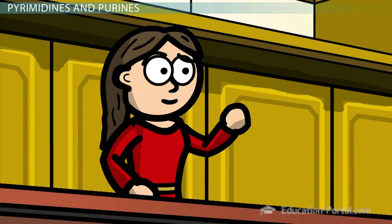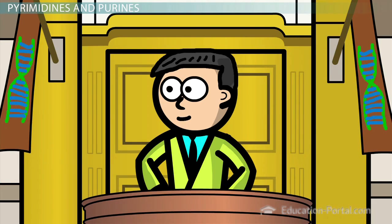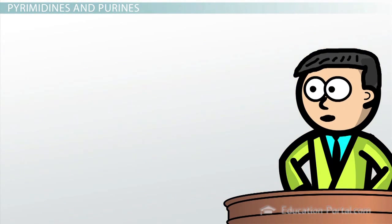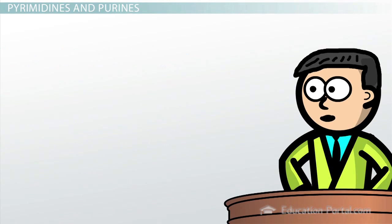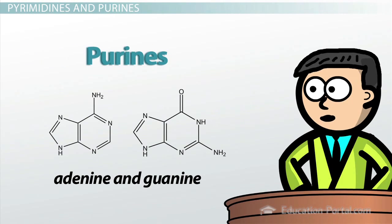Let's stick to the basic characteristics of DNA that pertain to the trial at hand. You were telling us about the nitrogenous bases. The bases can be categorized into two different groups: the single-ring nitrogenous bases, thymine and cytosine, are called pyrimidines, and the double-ring bases, adenine and guanine, are called purines.